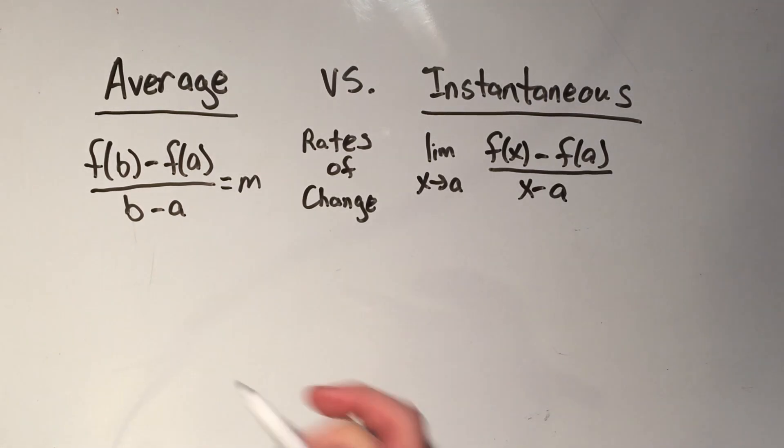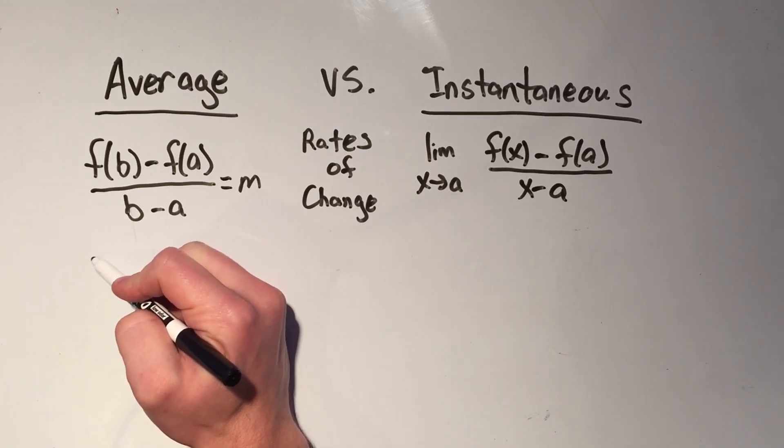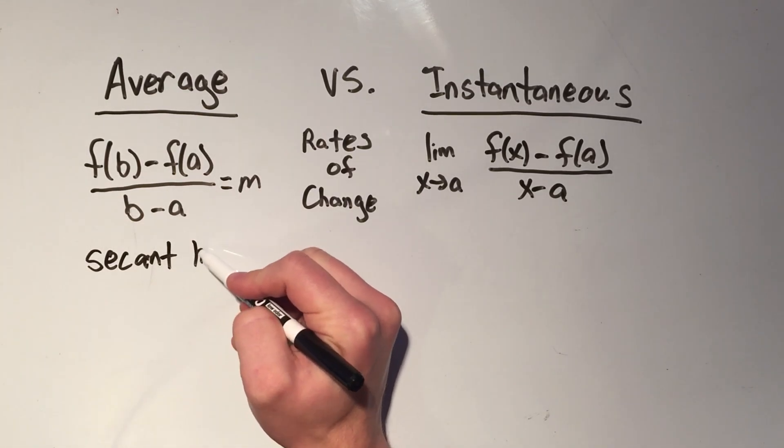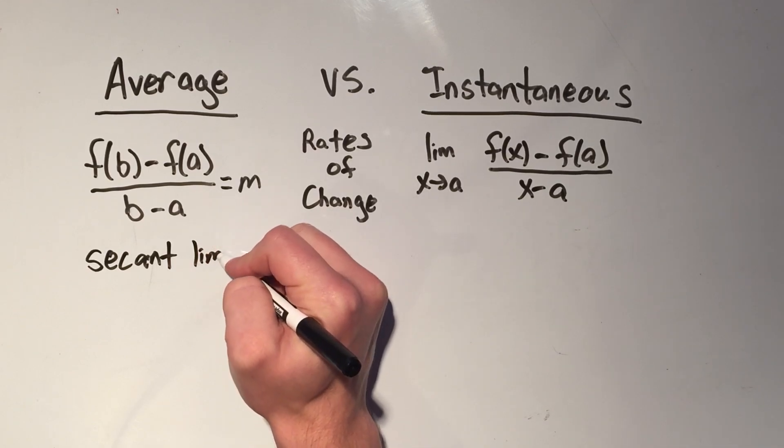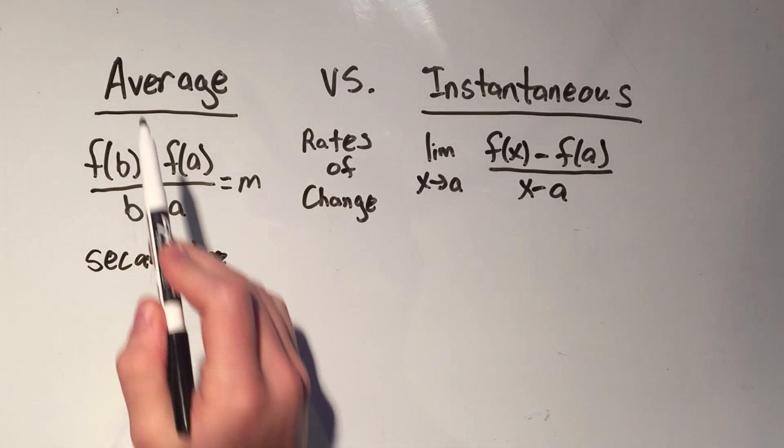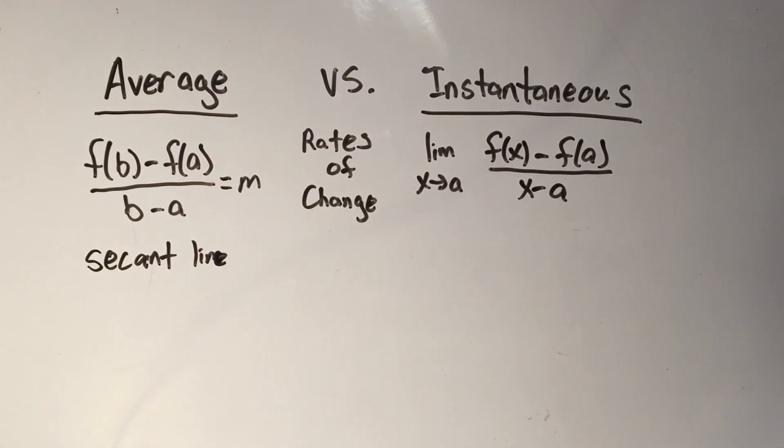And you also call this the slope of the secant line. So the average rate of change is the slope between two points or the slope of the secant line.